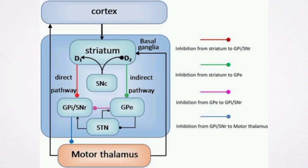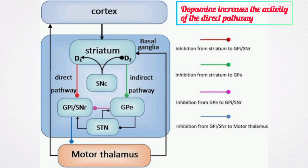The cells of the direct pathway have D1 dopamine receptors. When dopamine binds to these receptors, it excites the neurons, making them more likely to fire. Dopamine therefore increases the activity of the direct pathway.